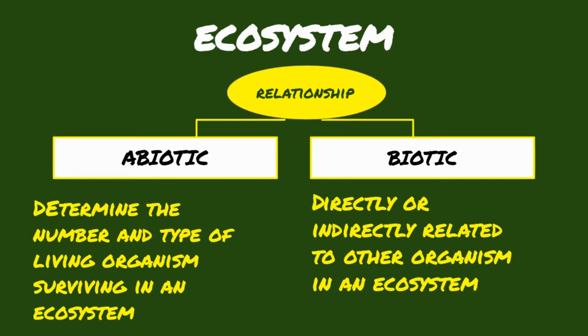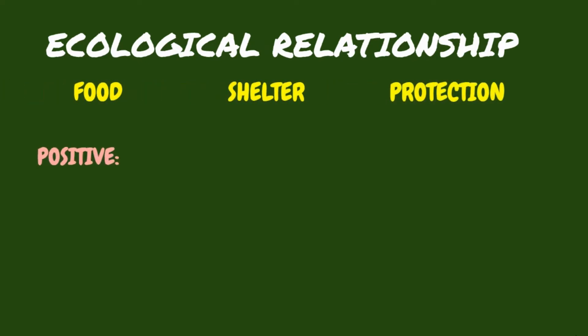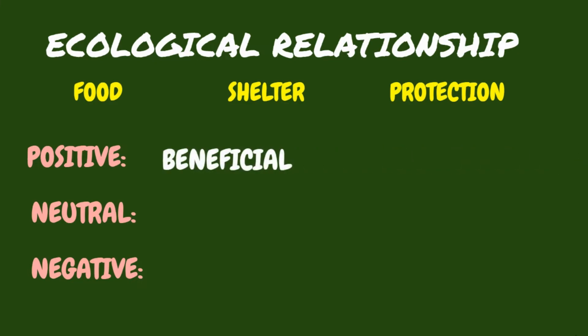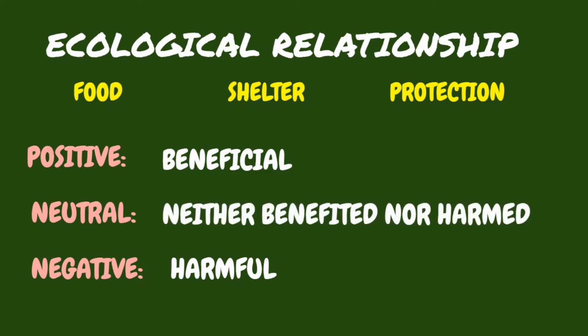Interactions and relationships exist in an ecosystem in search for food, shelter, and protection. These interactions may have positive, neutral, or even negative influences on the interacting population. Some interactions are beneficial, while others are harmful. There are also interactions where populations of organisms are neither benefited nor harmed. These interactions are called ecological relationships.